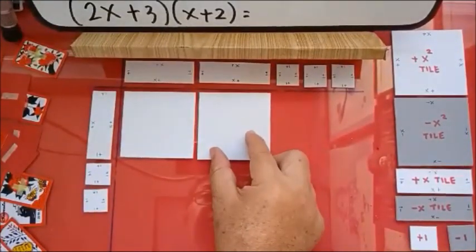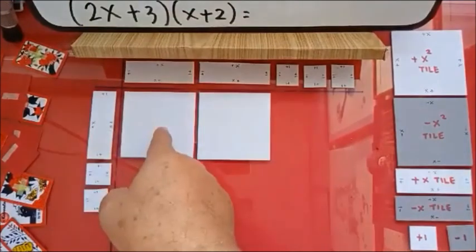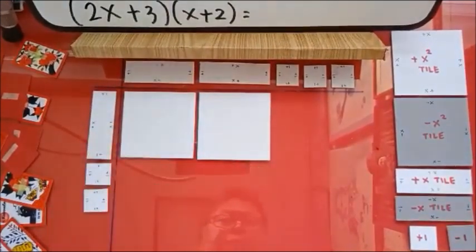Now we form the x squared tiles. Positive times positive is positive. Positive times positive is positive.